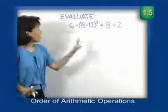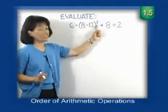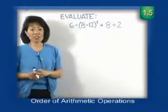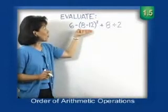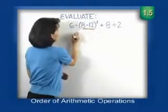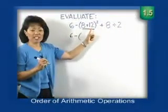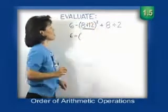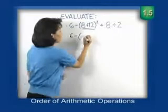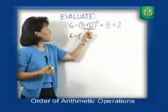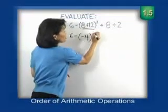Let's look at our next problem. We have quite a long expression: 6 minus, notice the 8 minus 12 in parentheses, raised to the second power, plus 8 divided by 2. The first step is to simplify any operation within parentheses. We have 8 minus 12. When subtracting real numbers, we change the sign to addition and change the sign of the number being subtracted to the opposite sign, so it becomes negative 12. The signs are different, so subtract the smaller from the larger: 12 minus 8 is 4. Take the sign of the larger in absolute value — negative 12 has a larger absolute value than 8 — so our result is negative 4, still within the parentheses being raised to the second power.